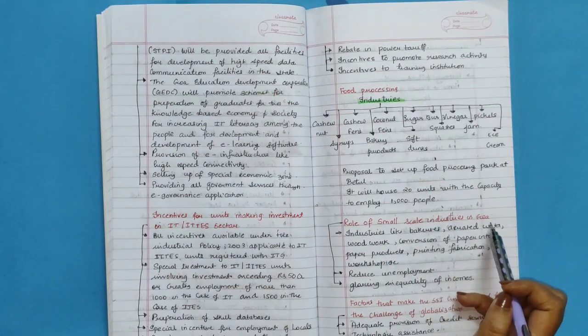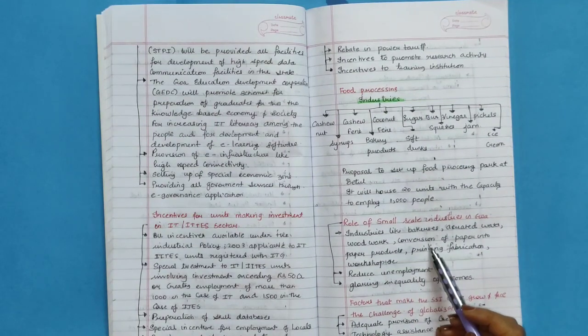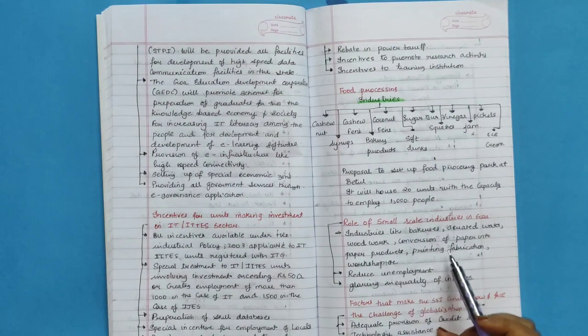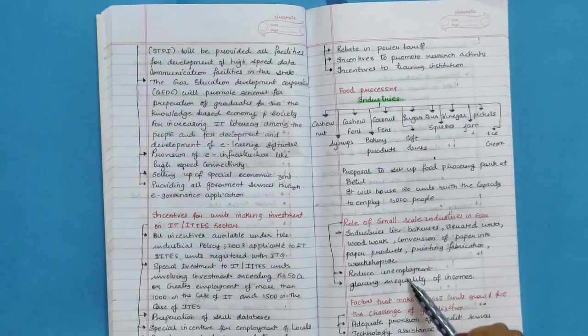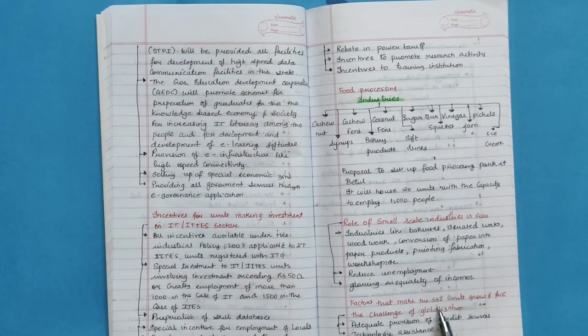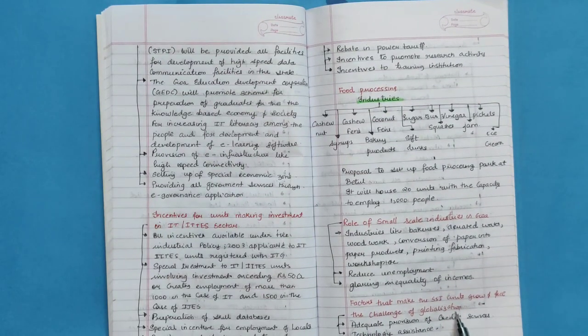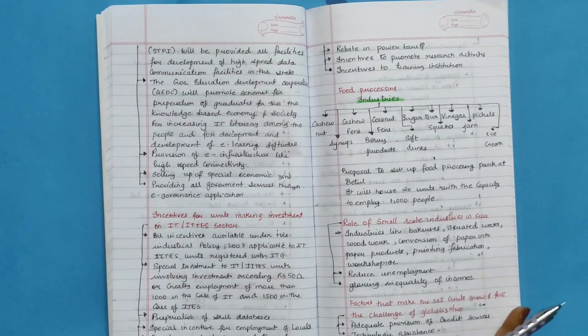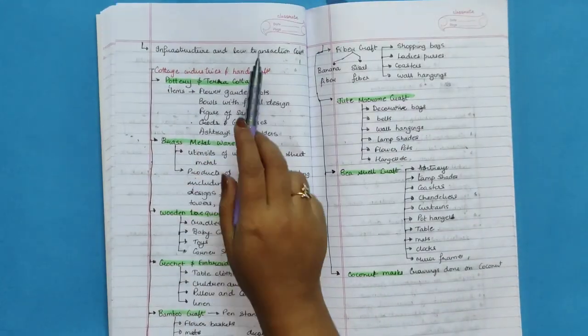Role of small-scale industries in Goa. Industries like bakeries, aerated water, woodwork, conversion of paper into paper products, printing, fabrication workshop, etc. Reduce unemployment, reduce inequality of income. Factors that make the SSI unit grow and face the challenge of globalization: Adequate provision of credit services, technology assistance, infrastructure, and low transaction costs.